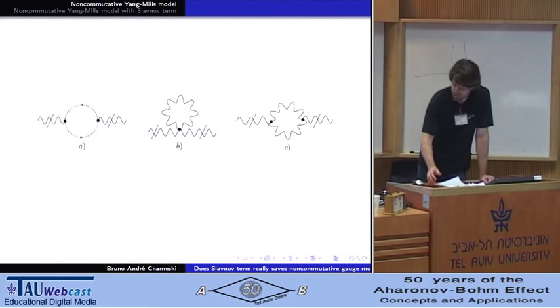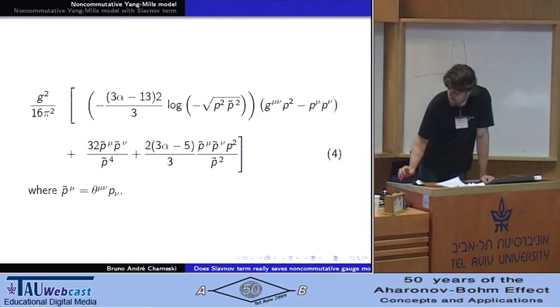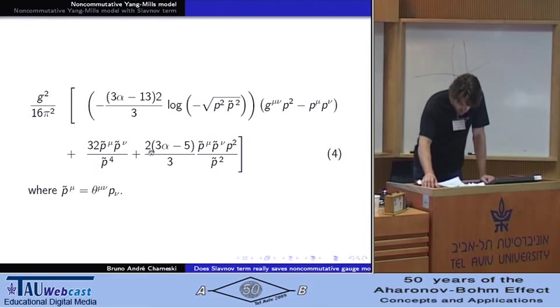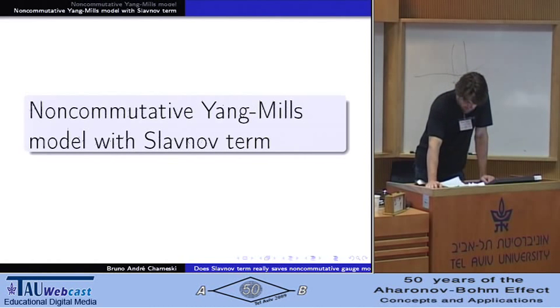And this is the diagrams of the self-energy. It's known that this model shows non-normalizable infrared divergences resulting from the introduction of noncommutative activity. And to solve this problem,